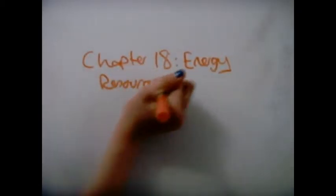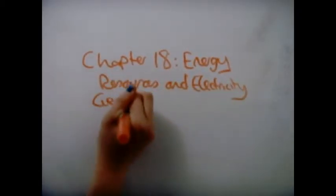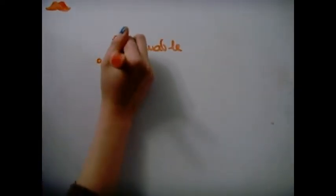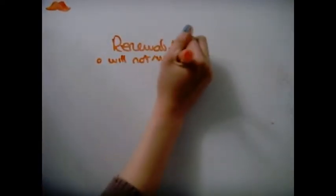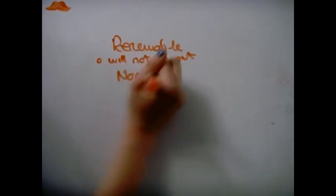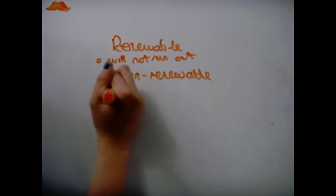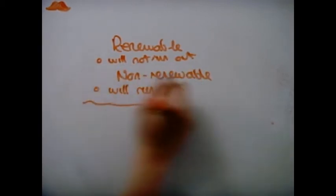Chapter 18: Energy Resources and Electricity Generation. Renewable resources are sources of energy where the source will not run out. Non-renewable resources is the opposite. Clean sources of energy do not produce pollutants.